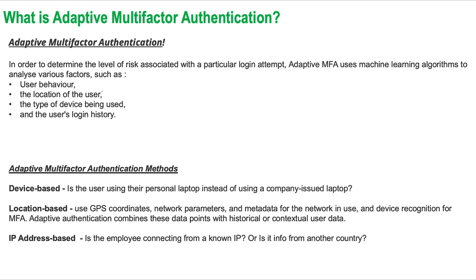Now let's move on to adaptive multi-factor authentication, also known as risk-based authentication. Adaptive MFA is a security system that uses machine learning algorithms to analyze various factors such as user behavior, location, device information, and login history to determine the level of risk and adjust the authentication requirements accordingly.